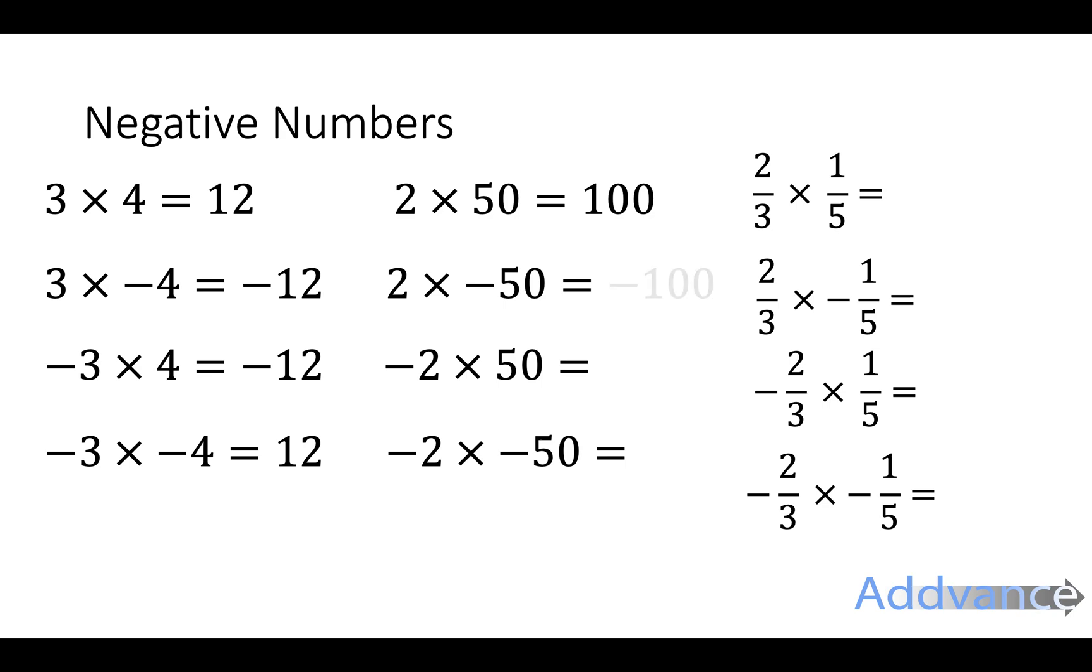Similarly, 2 times 50 is 100. Now, this also works with fractions. So, 2 thirds times 1 fifth is 2 fifteenths. So, it remains the same with fractions. Minus 2 thirds times 1 fifth is minus 2 fifteenths. So, it's the exact same for fractions. Don't be scared of it being a fraction.